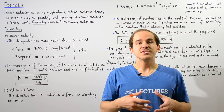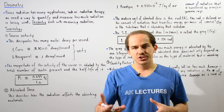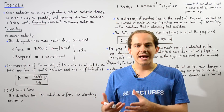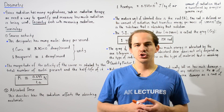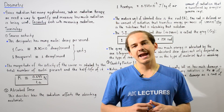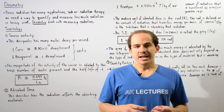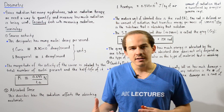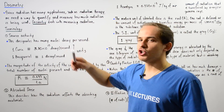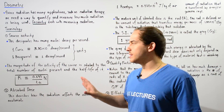Since radiation has many important applications — for example, radiation therapy used in medicine — it is very important to be able to measure and quantify how much radiation is produced by a radioactive source or absorbed by some material. The subject that deals with measuring and quantifying radiation is known as dosimetry, and that's exactly what we're going to concern ourselves with in this lecture.